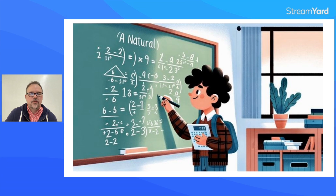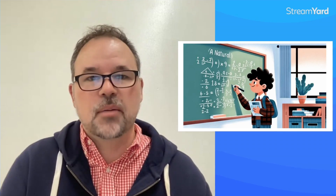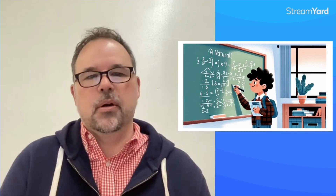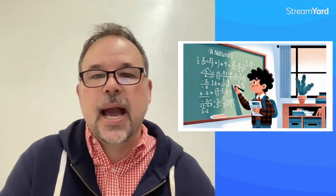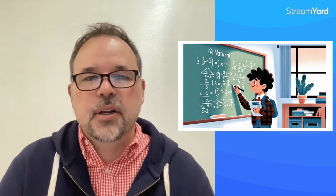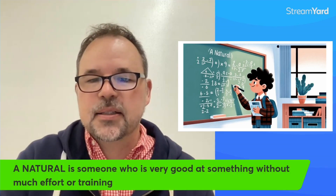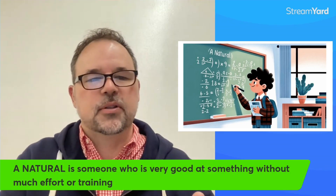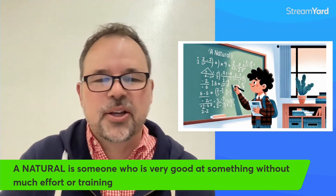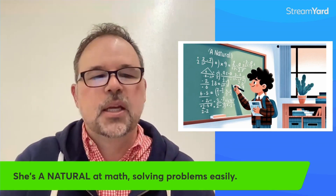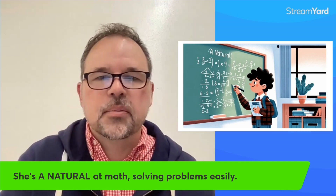If they were just born really good at math and it came naturally to them, they didn't have to work at it — well, that's good. It's not the case for me; I'm very bad at math. A natural is someone who is very good at something without much effort or training. Here's a sentence: She's a natural at math, solving problems easily.